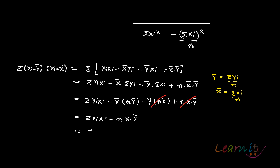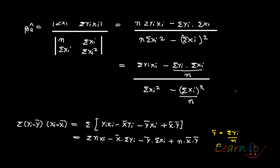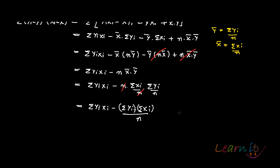So what you have is summation of yi·xi minus n into (summation of xi upon n) into (summation of yi upon n). The n's cancel out and what you have eventually is summation of yi·xi minus summation of yi into summation of xi upon n. This is your numerator.